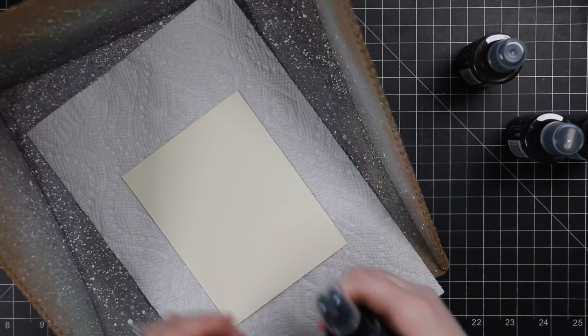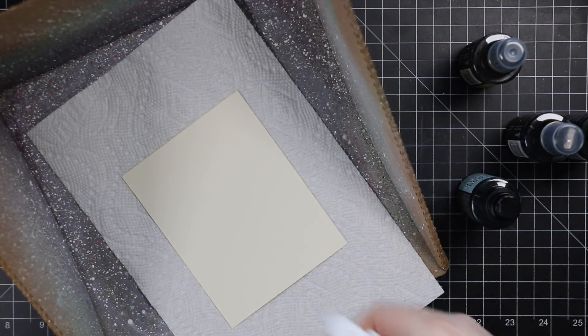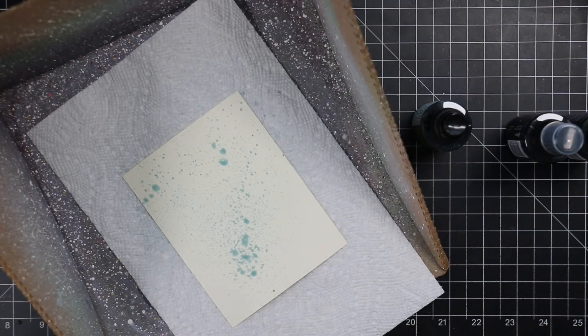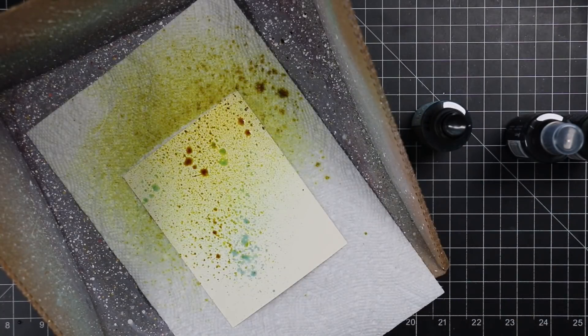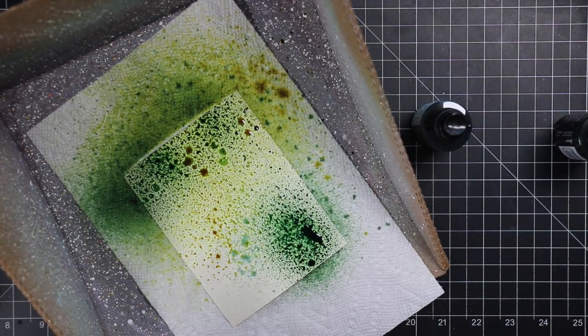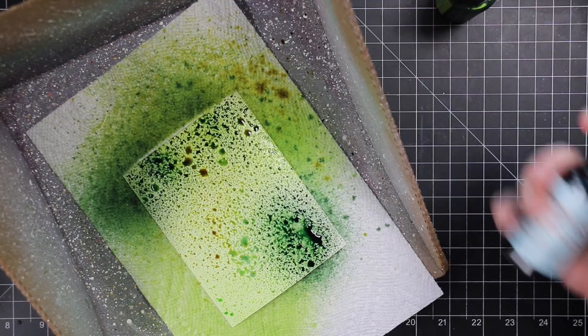So for today's cards, I started with some Distress mixed media heavy stock. You could also use Distress watercolor paper, the white heavy stock, anything that can hold up to a lot of liquid. So I started with that, have it in my splat box, piece of paper towel.